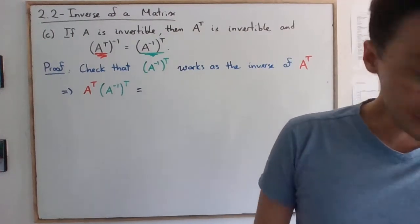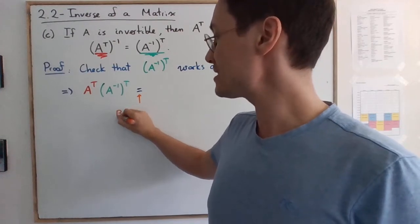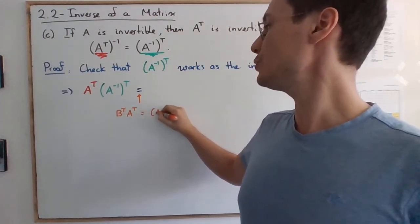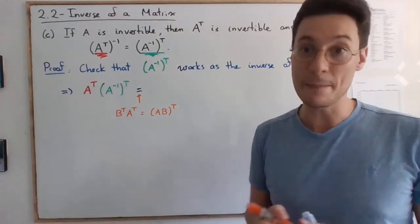What we're doing here is we're using the property that B^T A^T = (AB)^T. So we're using this property.